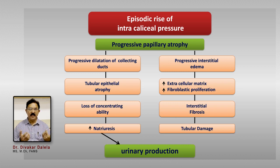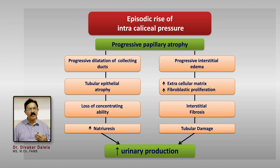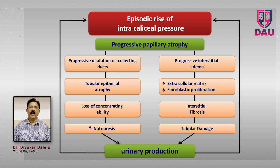So the tubules from within are being damaged by higher intratubular pressure, and from outside by the fibroblastic bands. When tubules are damaged in any kidney, the urinary production and urinary volume increases, and this will increase the intrapelvicalyceal pressure again. Now you have a vicious cycle: increased intrapelvicalyceal pressure leads to more compression of the papilla, more tubular damage, more output, more pressure — and thus this kidney damage becomes a progressive phenomenon.